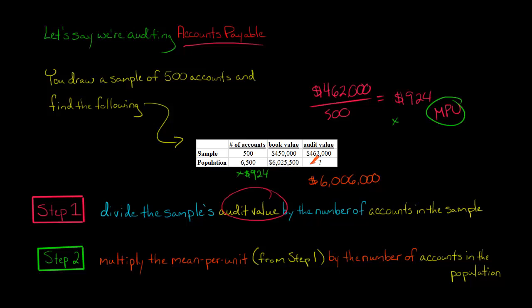And so what is this number? Well, it's going to replace our question mark here. This is our implied audit value for the entire population. For the 6,500 accounts, the accounts payable that we're owing to different entities, the implied audit value is $6,006,000.